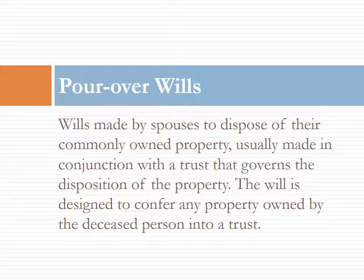Another category of wills mentioned frequently is the pour-over will. This type of will is used in conjunction with a trust, where the trust and the trustee are going to be the owner of all the property. If the trust is being used as a testamentary device — that is, a device for transferring property after death — often the person drafting the trust will recommend that in addition to the trust, the people putting their property into the trust sign a pour-over will. This provides that any property that fails to be transferred to the trust during lifetime is transferred upon the death of those making the trust. It's a backup provision to make sure that all the property gets into the trust.